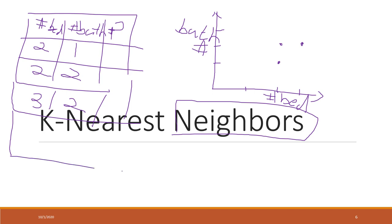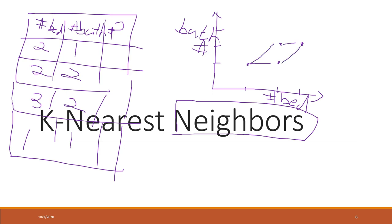Let's say we have another house which has one bedroom and also one bathroom — so that is this point. Now we can map each single house record as a vector, and we can calculate the distance. In this case, it's not a great example because the distances are pretty much similar, but we are looking at those neighbors.